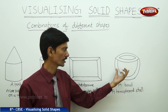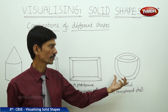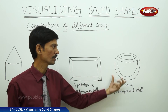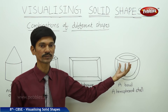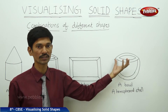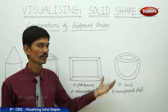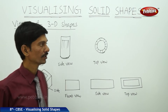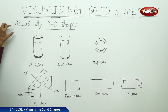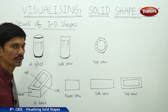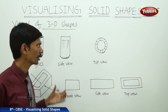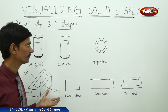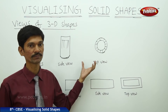The fourth figure is a ball. In this ball there are two hemispheres — it is a hemispherical shell with one inner hemisphere and one outer hemisphere. We can take combinations of different shapes. Now let us discuss the next topic: views of 3D shapes. Three-dimensional objects, meaning solid shapes, can look differently from different positions, and we can draw them from different perspectives.